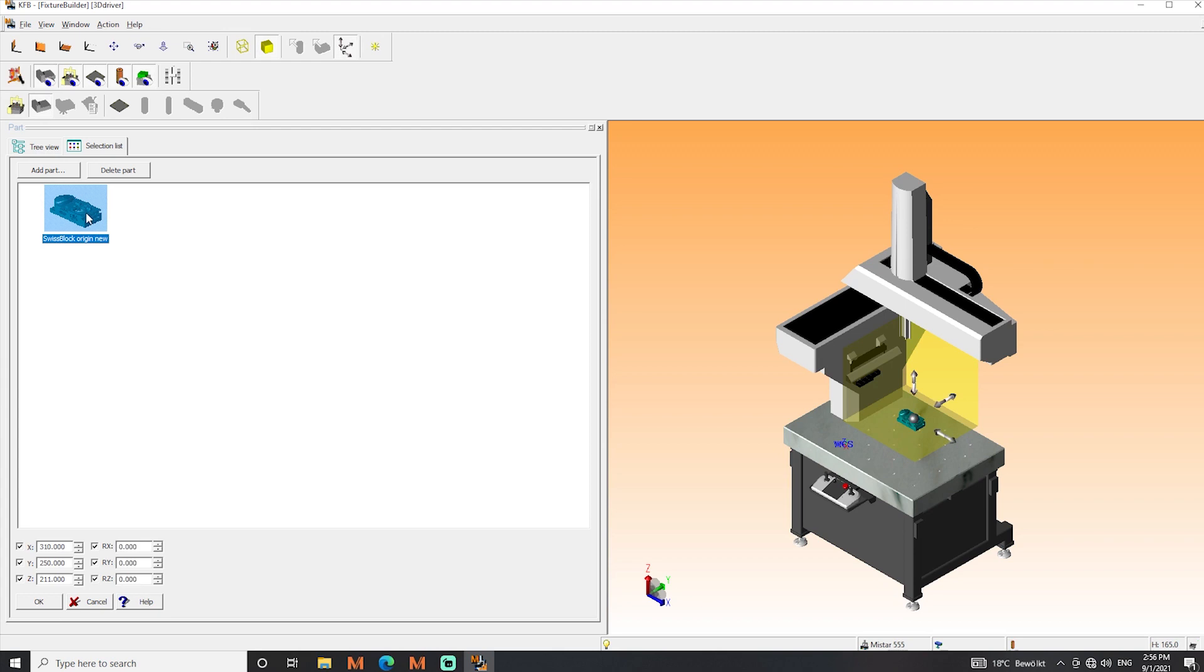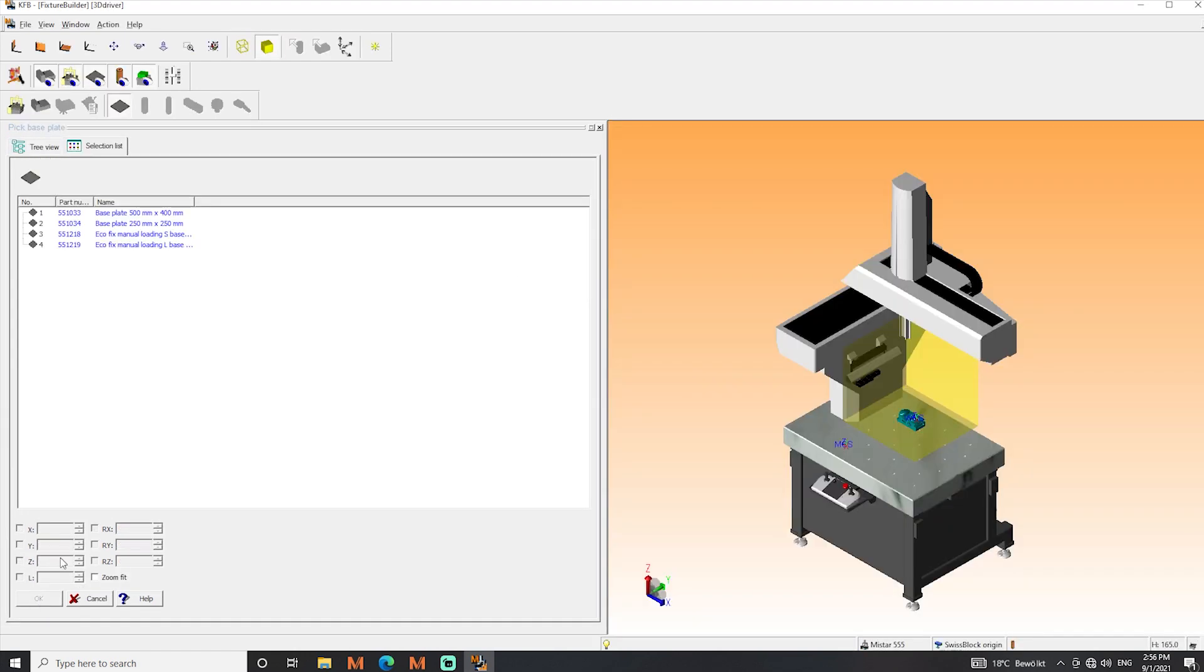Then you have to load the part. You can source it from a folder on your computer. When clicking OK, it is already loaded in the Fixture Builder software.